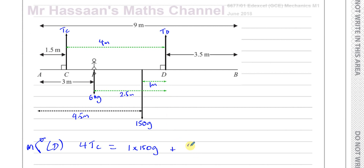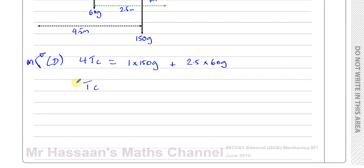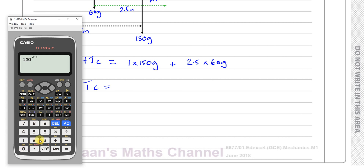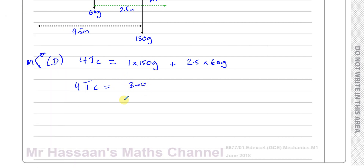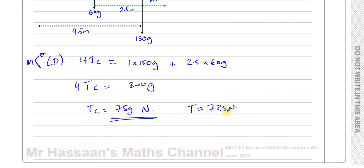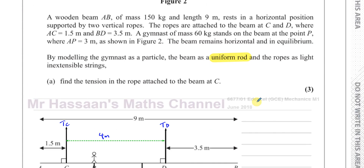So we can find the tension at C. Calculating: 150 plus 2.5 times 60 equals 150 plus 150 equals 300. So 4 × Tc = 300g, meaning Tc = 300g ÷ 4 = 75g newtons. Multiplying by 9.8 gives 735 newtons, which can also be written as 740 newtons to 2 significant figures. I prefer to leave the answer as 75g newtons. That's the answer to question three part (a). Now for part (b).